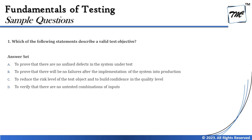The options here are: Option A — to prove that there are no unfixed defects in the system under test. I think that's a contradictory statement with respect to Principle Number One, which states that testing can only show the presence of defects but cannot prove their absence. That certainly cannot be taken as one of the objectives of testing.